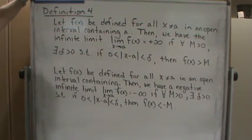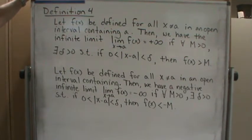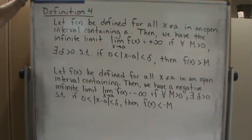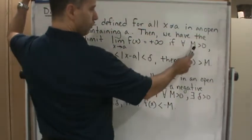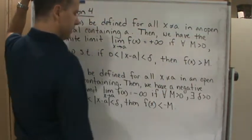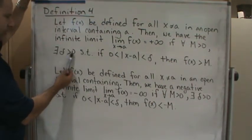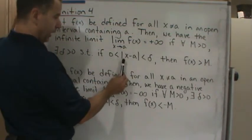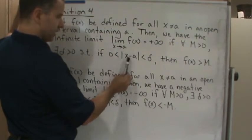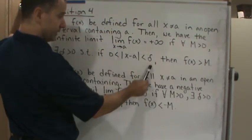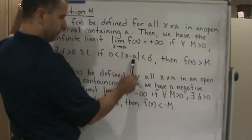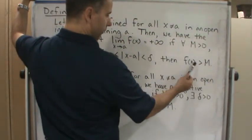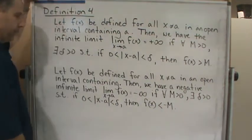Now here's where it gets formal. We have the infinite limit: limit of f(x) as x approaches a equals positive infinity if for every M greater than 0 (so M is some real number), there exists a delta greater than 0 such that if the distance from x to a is less than delta - so basically as x gets closer and closer to a - then the value of the function is going to be greater than M. What does that mean?